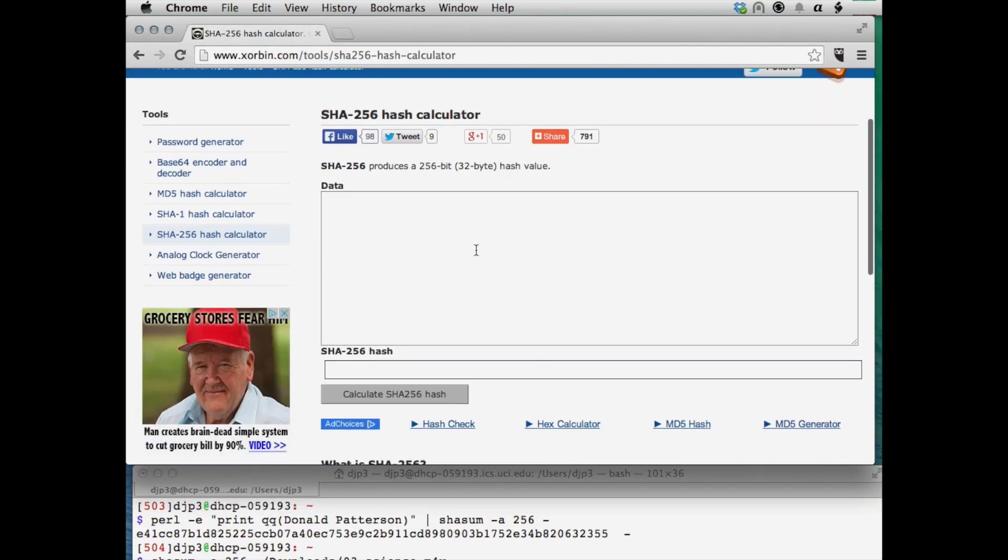And what we're going to do is we're going to put in some data. We'll put in my name again, and then we'll come down here, and we'll calculate the 256 hash or the fingerprint. And you can see that the hash function that's calculated here, e41cc2355 and all the letters in between, matches the fingerprint of the same data that I calculated here, e411cc all the way down to 32355.